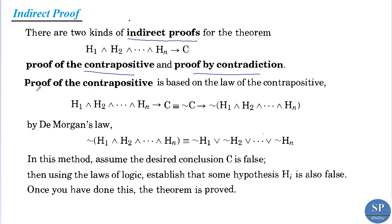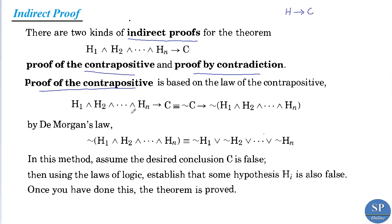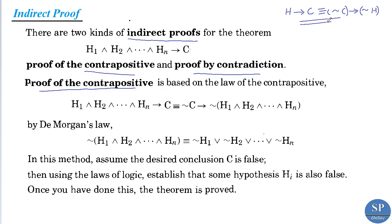What is proof of the contrapositive? Suppose we have a theorem H implies C. The proof of the contrapositive is based on the contrapositive law. The law of contrapositive states that H implies C is logically equivalent to negation C implies negation H.